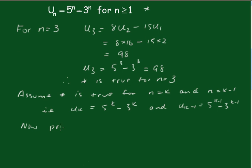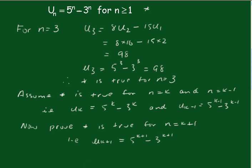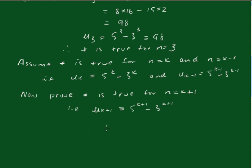Now prove the statement is true for n equals k plus 1. That is, U(k+1) equals 5 to the k plus 1 minus 3 to the k plus 1. Now, U(k+1) does equal 8·Uk minus 15·U(k-1) — that is given.